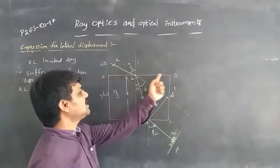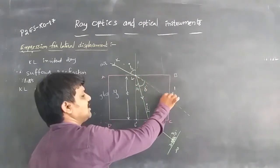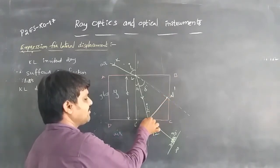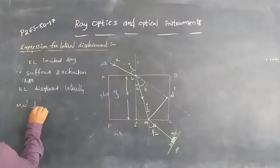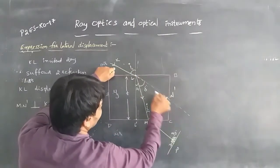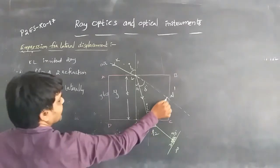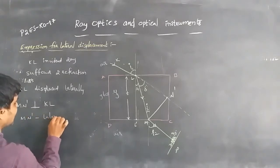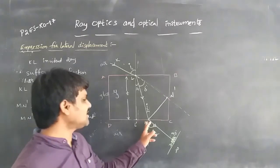Whenever the incident ray is incident on face AB, it refracts and travels to point M. Here, MN dash is the lateral displacement — it is perpendicular to the incident ray KL. So MN dash represents the lateral displacement of the light ray.